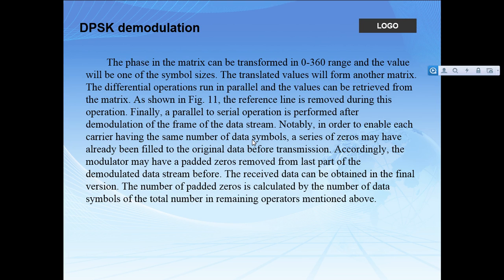DPSK demodulation works like DPSK modulation but in the inverse way. The phase in the matrix is transformed to the 0-to-360 degree range, and the value will correspond to one of the symbol sizes. The translated values form another matrix, and through differential operations, the parallel values are recovered. Padding zeros are calculated based on the number of data symbols and remaining operations — it is very important to add zeros to ensure each carrier has the same number of data symbols, since you cannot guarantee all carriers carry data with the same number of symbols. These padding zeros may have been filled before transmission, and the demodulator removes them from the last part of the demodulated data stream.